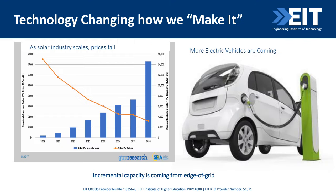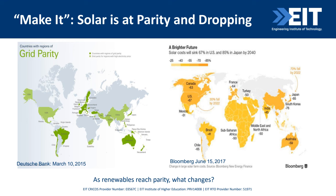The solar prices are going down, with more and more coming in. Solar is definitely at parity. The solar cost in the United States has sunk by 67% and in Japan by 85%. These prices are going to go down further throughout the world — the picture shows how prices are shifting globally.